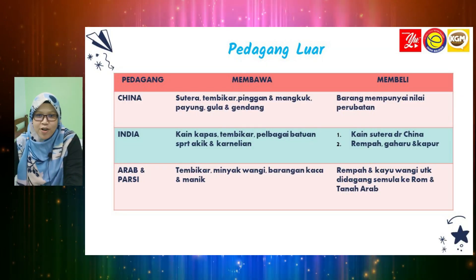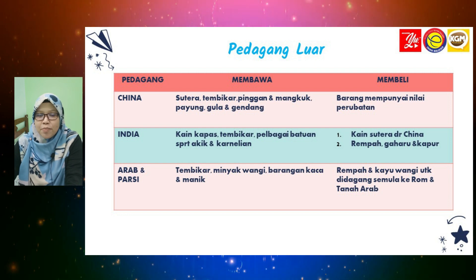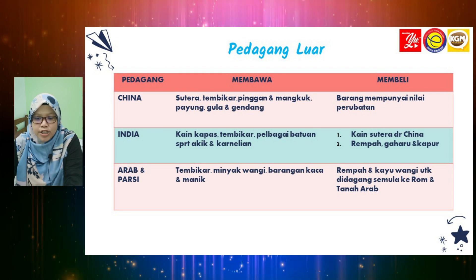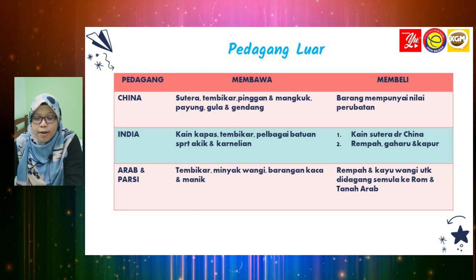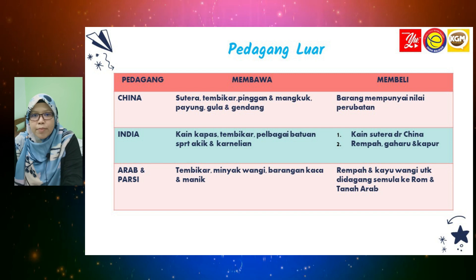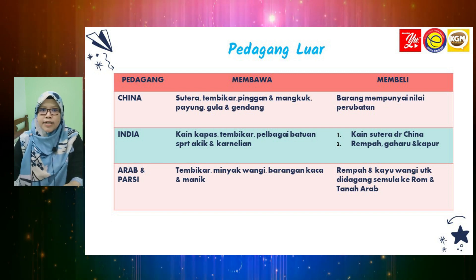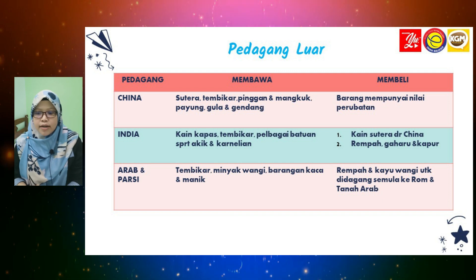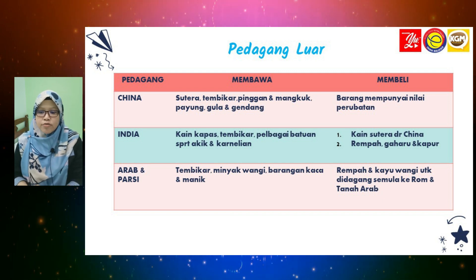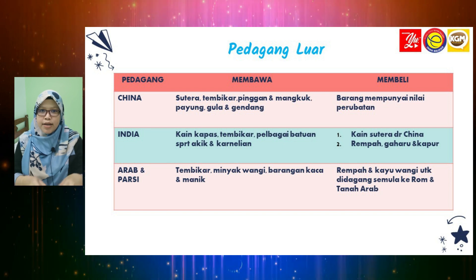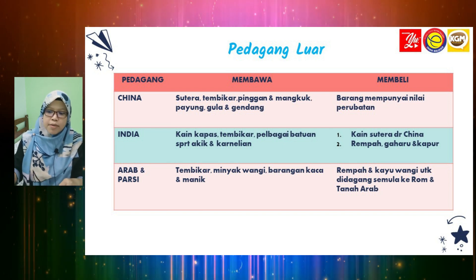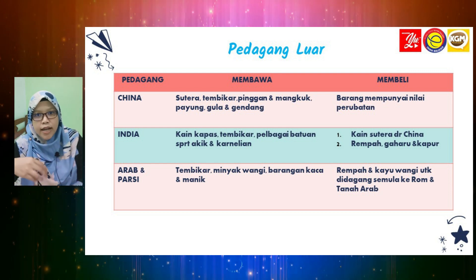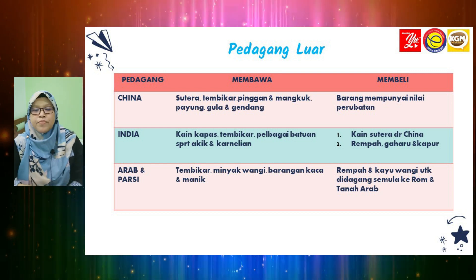Kita dah tengok pedagang tempatan, kini kita tengok pedagang luar. Pedagang luar yang ada adalah daripada Cina, India, Arab dan juga Parsi. Pedagang Cina datang membawa sutera, tembikar, pinggan dan mangkuk, payung, gula dan gendang. Bila berada di alam Melayu, mereka membeli barangan yang mempunyai nilai perubatan dan dibawa balik.